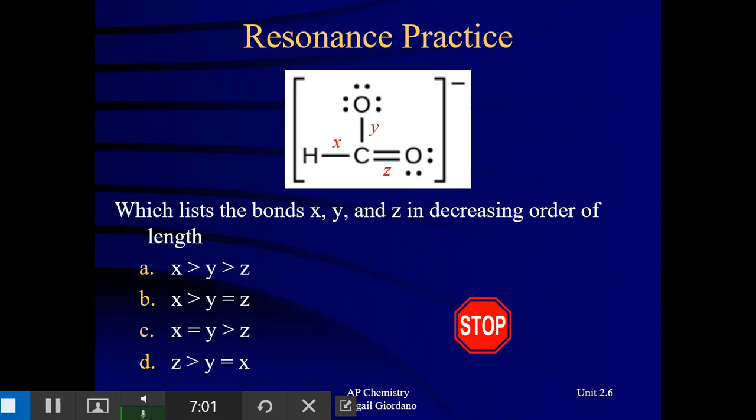Let's look at a problem here. I've given you a Lewis structure that is already drawn out for you, and I have labeled the three bonds here: bond X, bond Y, and bond Z. It says which of the following lists the bonds in decreasing order of length. Pause the video, see if you can figure this one out.